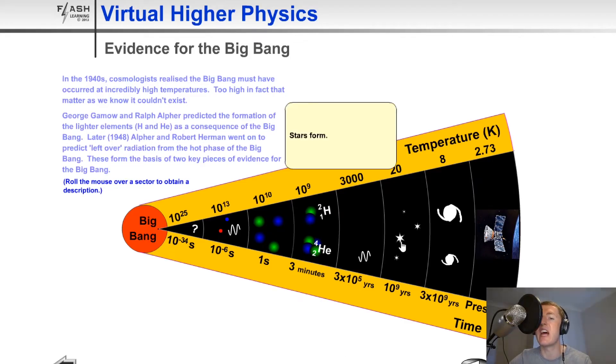Then going to a billion years, 10 to the 9 years after the Big Bang, stars started to form. And then about 3 billion years after the Big Bang, galaxies and clusters of galaxies started to form.